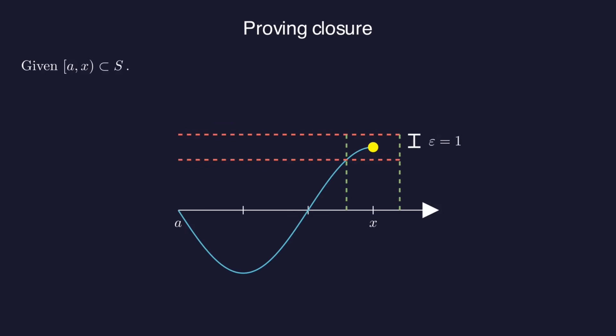Okay, back to our continuous function F. All the points to the left of X are in S. Now what about X itself? Once again, we'll let epsilon equal 1, and there's some interval around X where F does not deviate from F of X by more than 1.